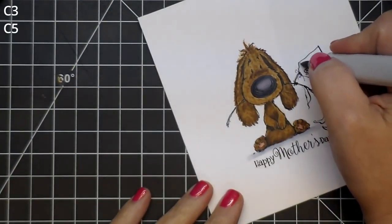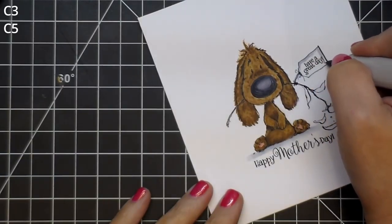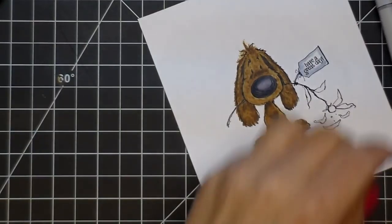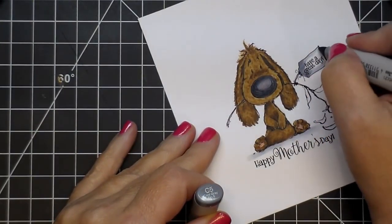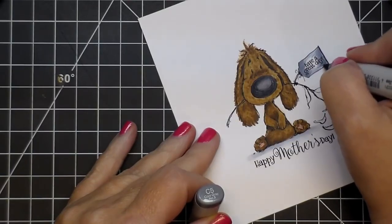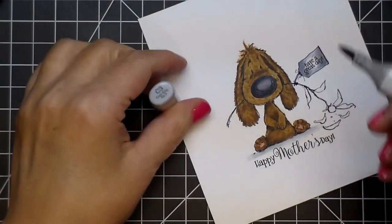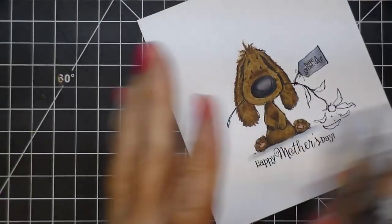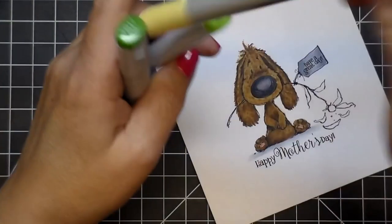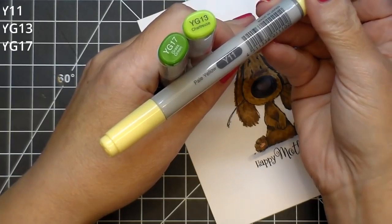I'm also going to use the C3 and C5 for the little sign that says 'have a great day.' Again, the stamp did not come with that in there—I added the wording in there. Here's the C5, and then I'll blend that back out with the C3. Super fun. I printed this out much larger and colored it as well.